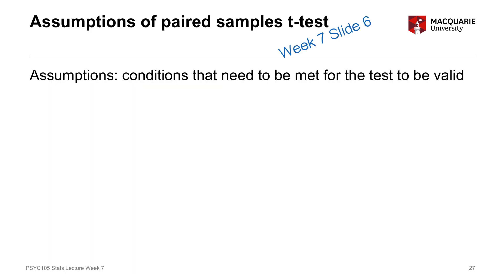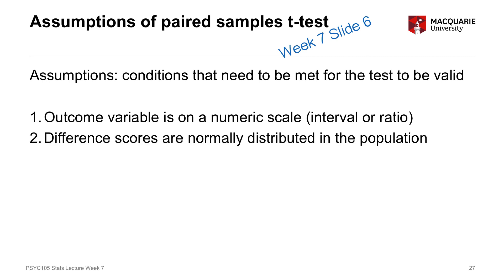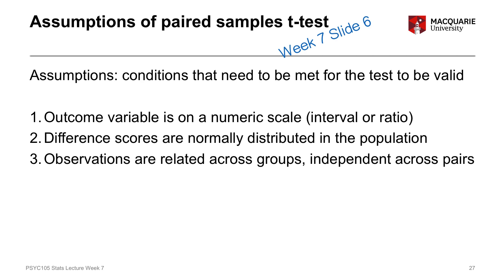Reviewing our assumptions: we know the outcome variable is on a numeric scale, which we can confirm from information about the experiment and by looking at the data. We know the difference scores are normally distributed because we looked at the histogram and ran the Shapiro-Wilk test. We also know, through information about the sampling design, that observations are related across the two groups but independent across pairs. All three assumptions are met, so we can proceed to our paired samples t-test.